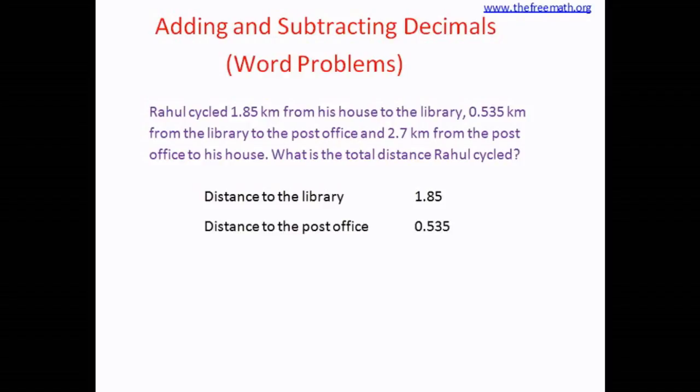The second one is to the post office which is 0.535. And the third distance is back to his house which is 2.7 km. All the distances are in km so I am not explicitly writing here as km.